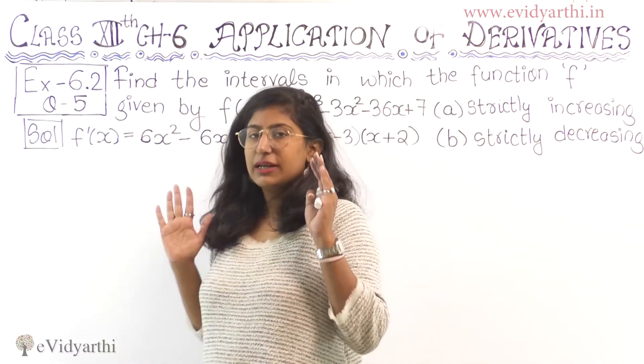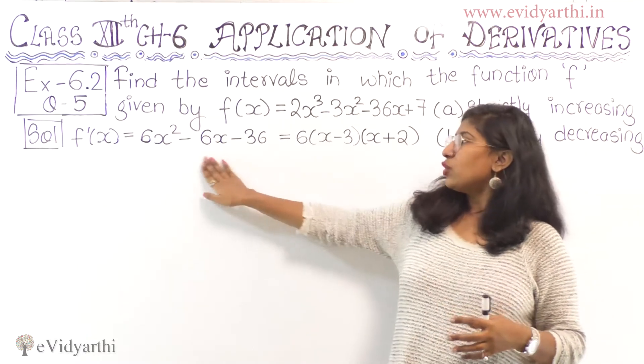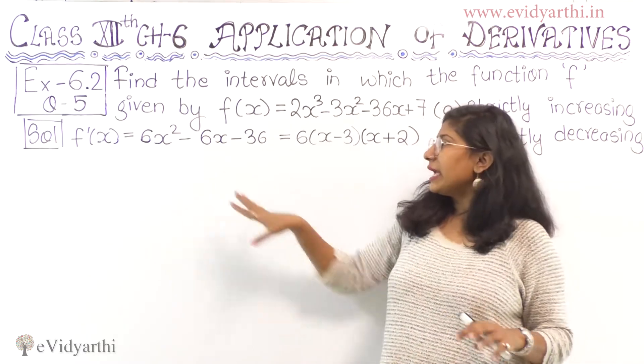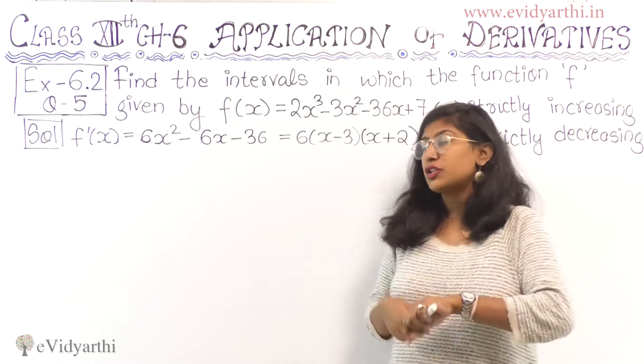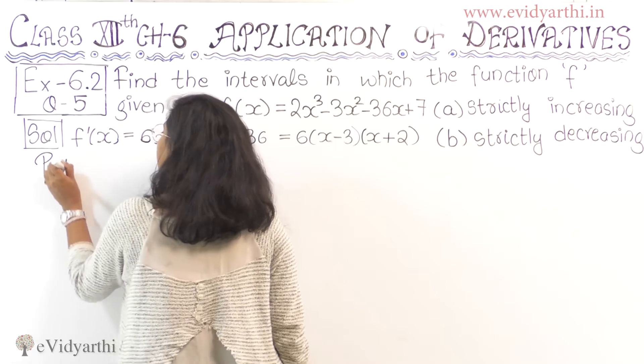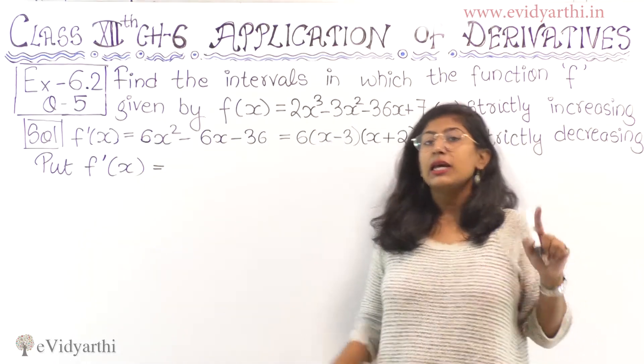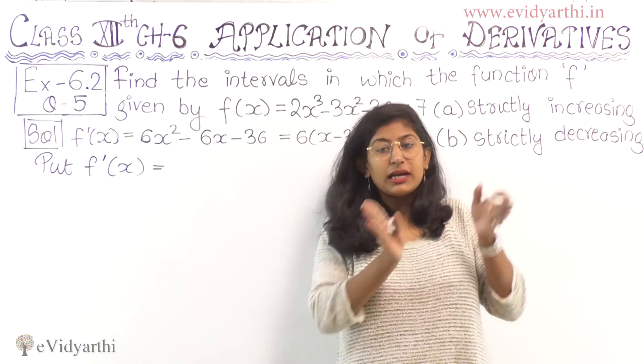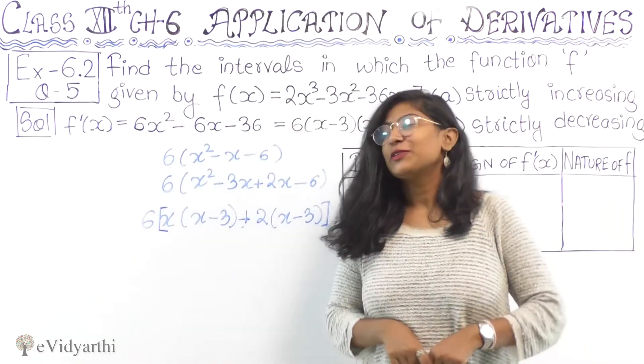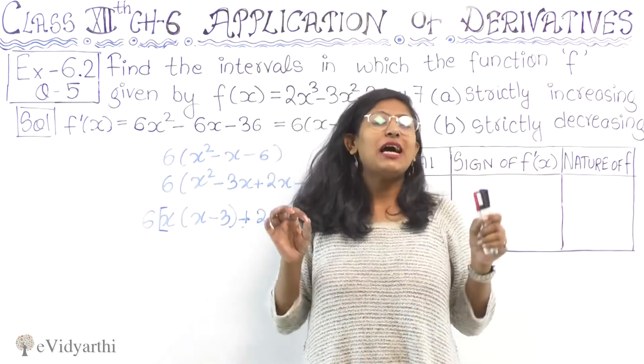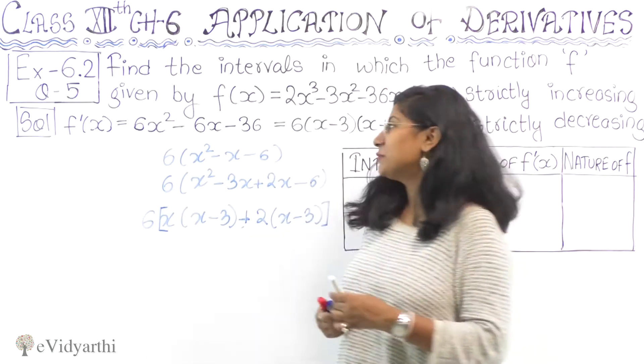Now we need to check where the derivative is positive and where it is negative. This is a fixed step that I have written in the introduction video. We need to keep the derivative equal to 0 so that we can find critical points and divide the real line.